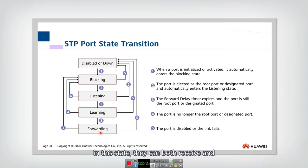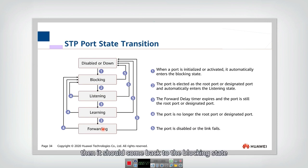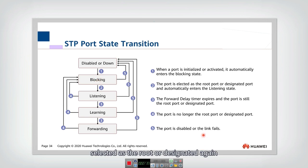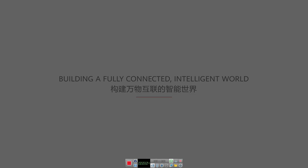In the forwarding state, the port can both receive and send service data. At any state, if there is a link failure, the port changes back to the disabled state. And in the listening, learning, or forwarding states, if the port is no longer the root port or designated port, it returns to the blocking state and waits until it is selected again. The reason for requiring two forward delays before entering forwarding is to prevent the switch from frequently switching between disabled and forwarding states.